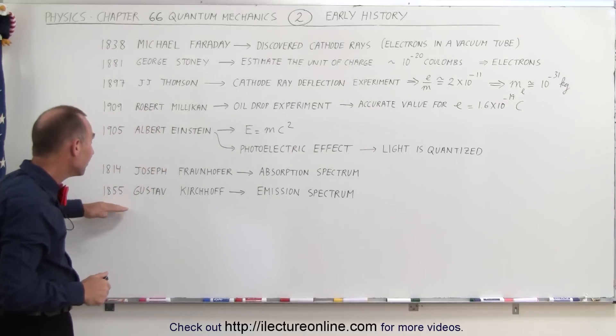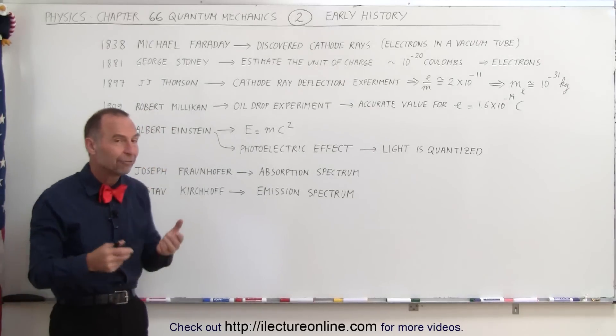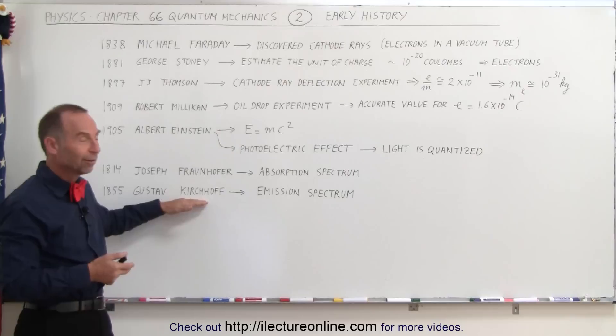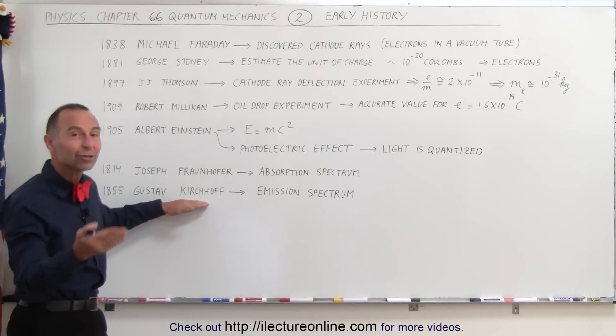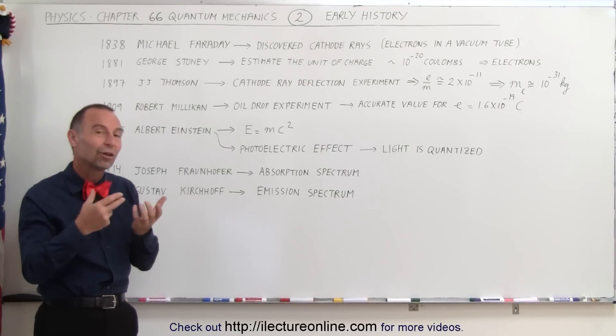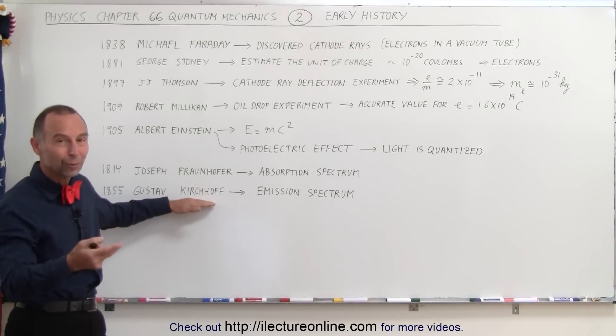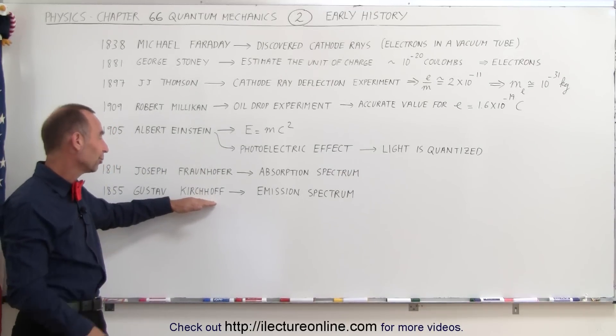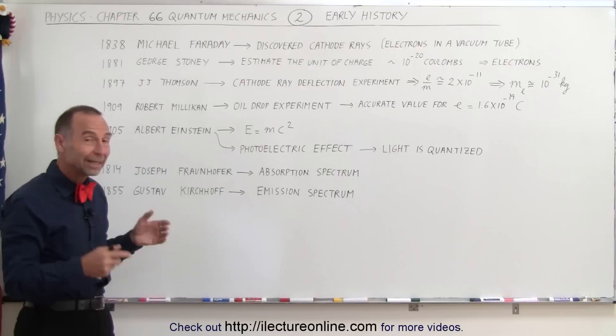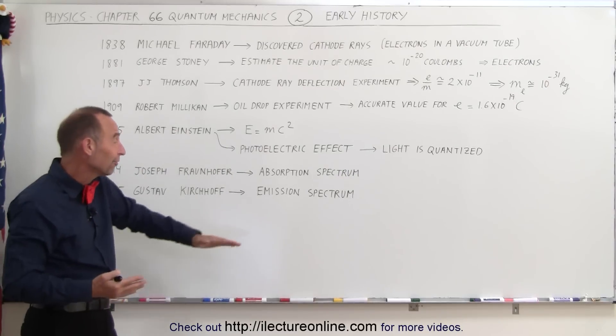Then, later on, in 1855, Gustav Kirchhoff, again, a very famous name. We might know the name Kirchhoff more in electricity magnetism when we use his rules of circuit analysis to come up with the current in a circuit that has multiple voltage sources. But he did studies in other fields of physics as well.